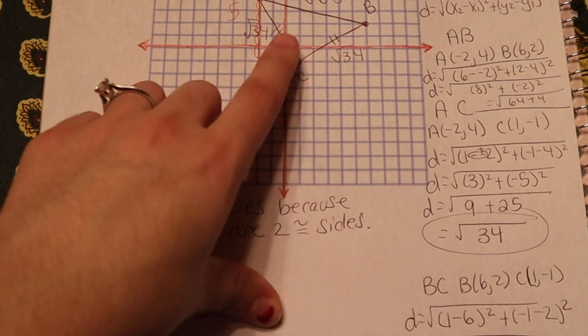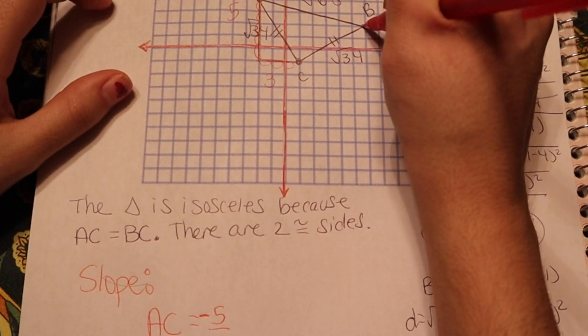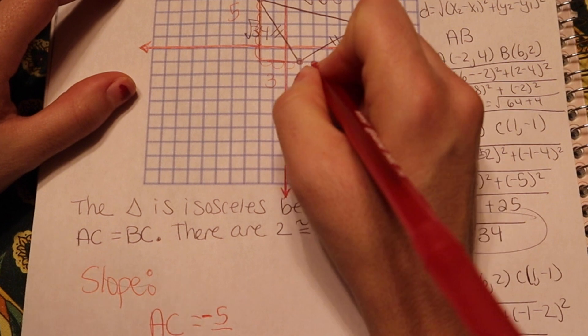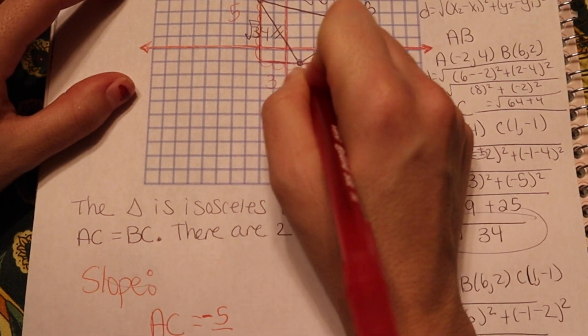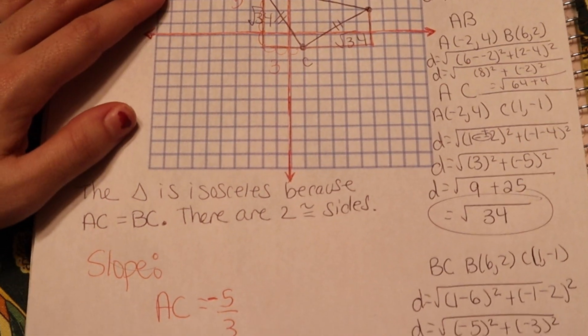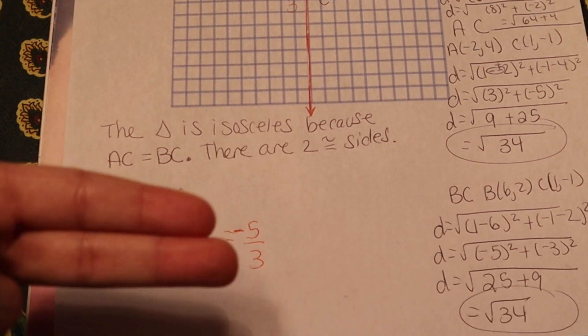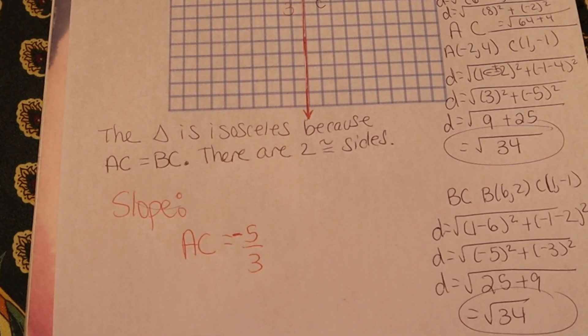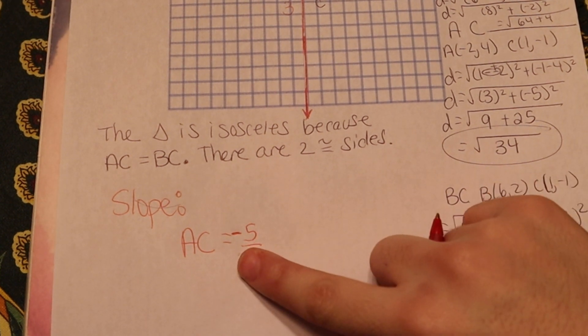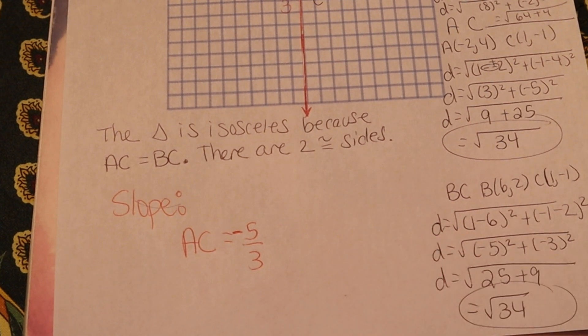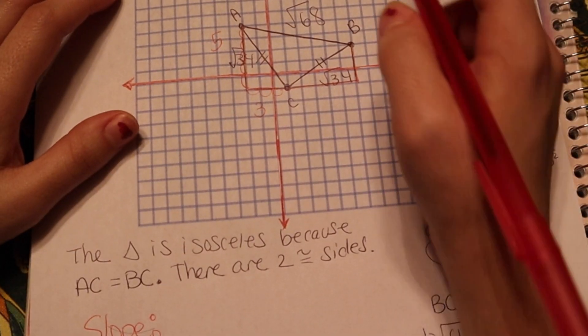Now if there's a 90 degree angle, the slope when I make the triangle over here would have to be the opposite reciprocal. What opposite reciprocal means is that I have this fraction. It will be flipped. That would be the reciprocal portion. So the reciprocal of 5 over 3 is 3 over 5. And the sign would be opposite. So if this one is negative, this one's slope will have to be positive.